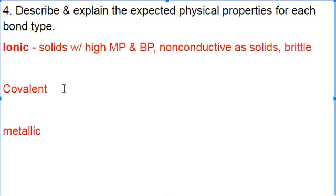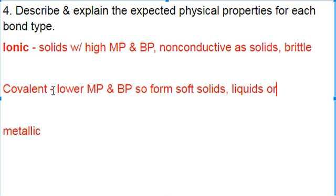Covalent bonds, on the other hand, are much weaker, so they tend to have much lower melting points and boiling points. They form what we call soft solids, liquids, or gases at room temperature.